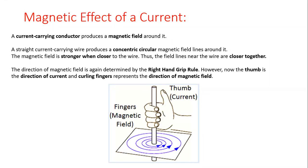The magnetic field produced around a conductor is in the form of concentric circles, as shown in the diagram. There is a conductor, and the thumb shows the direction of current — the current is flowing upward, or in other words, out of the plane. So there is a magnetic field produced in the form of concentric circles. Concentric circles means all circles share the same center.